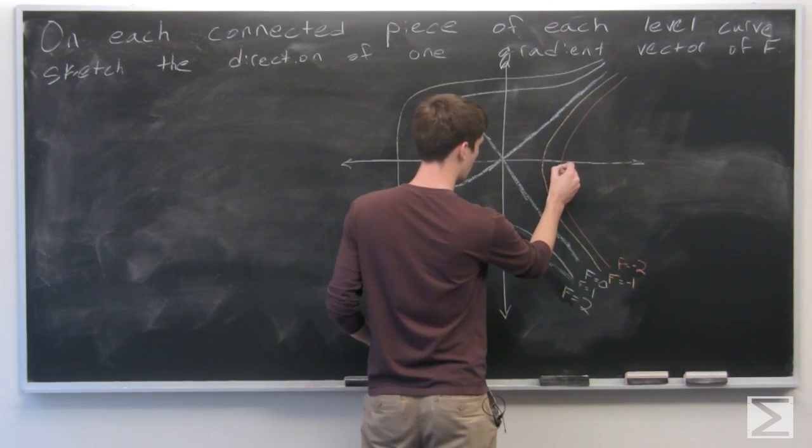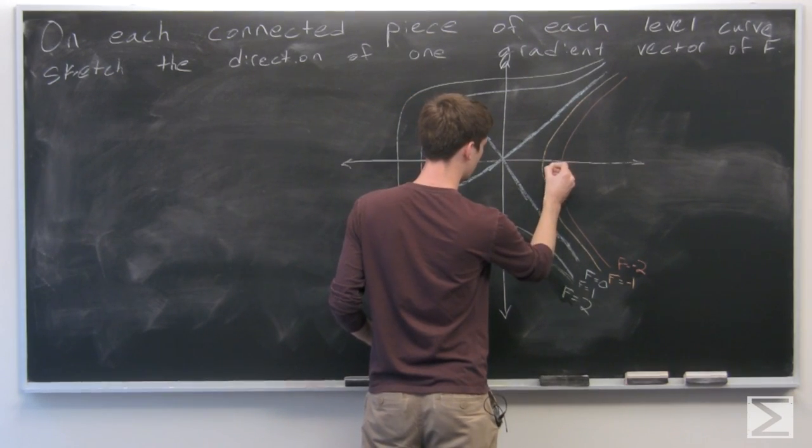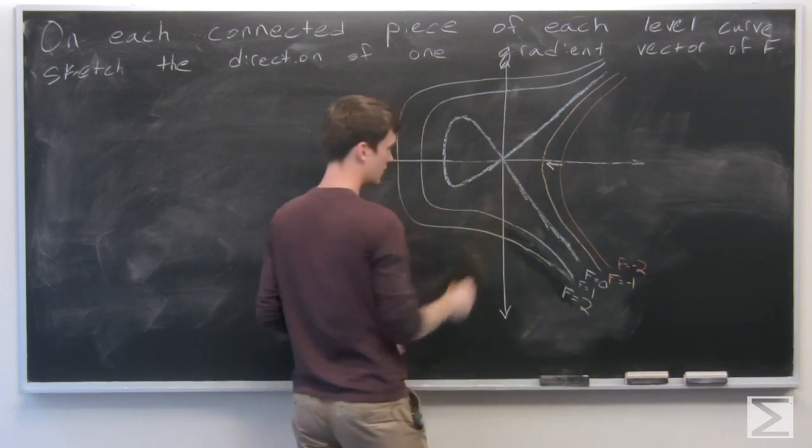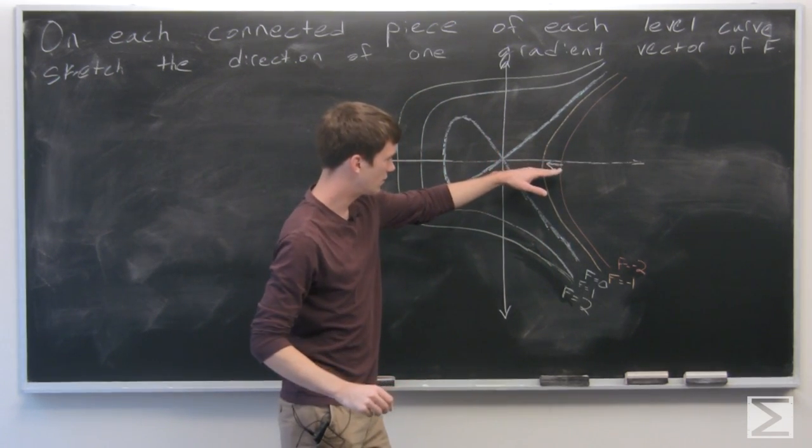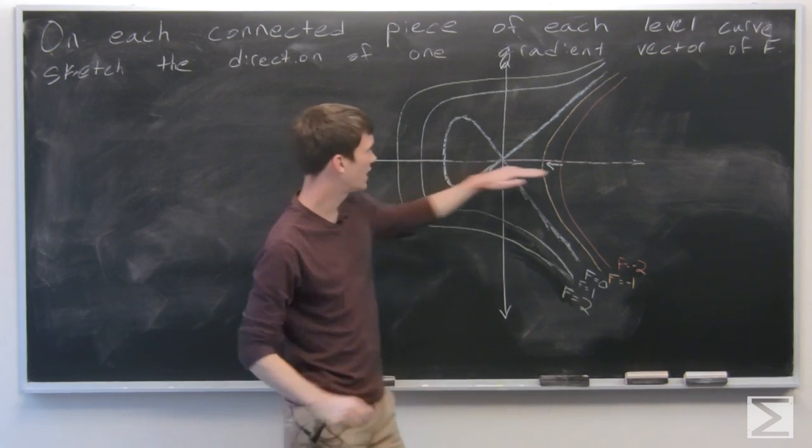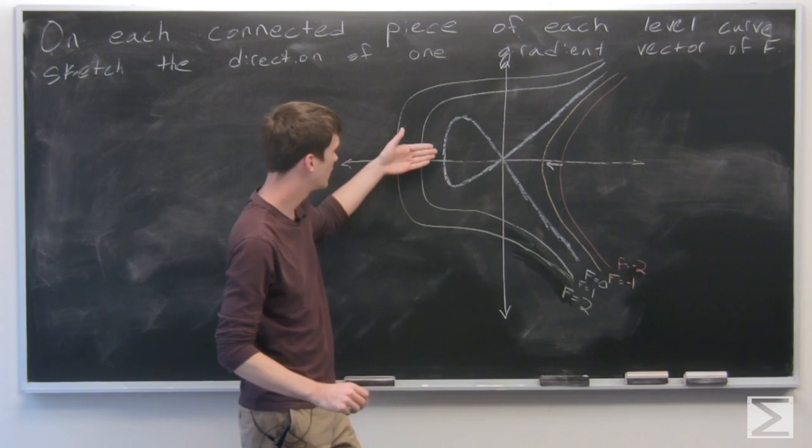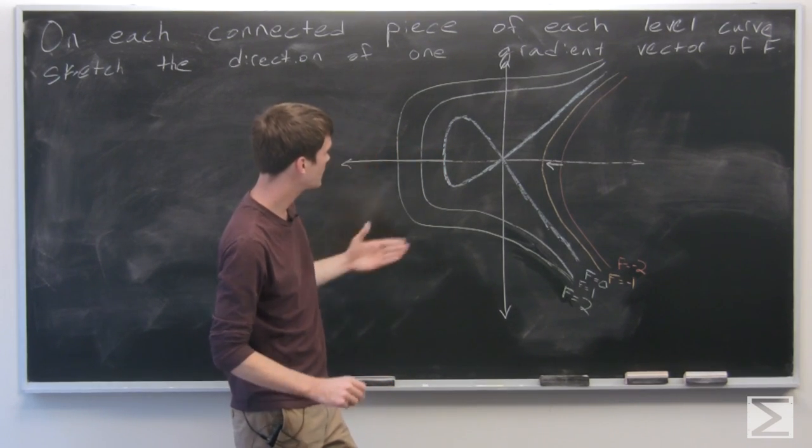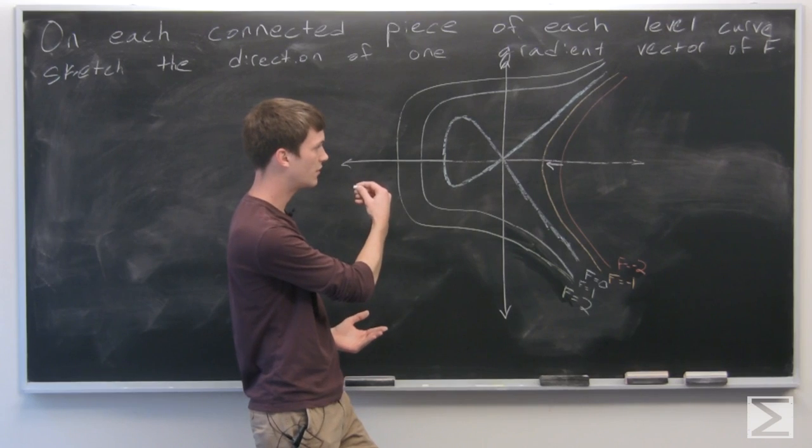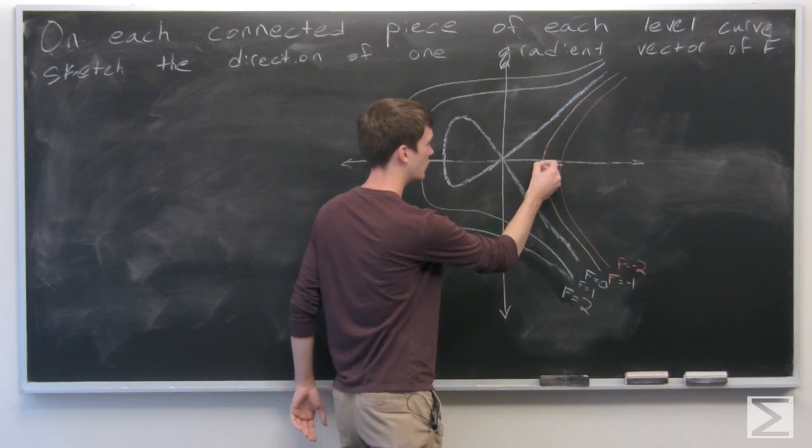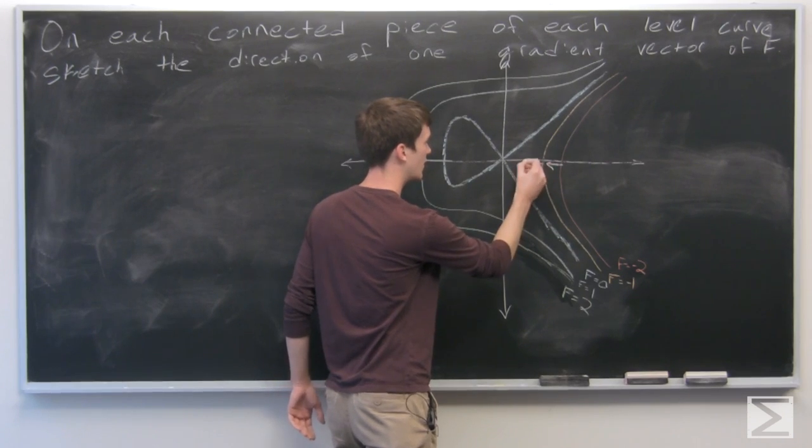So the easiest one would be right at where I drew the x axis. We see that all of the curves are kind of flat at a point, so we can draw our gradient vectors as perpendicular in that direction since we're going in the direction of increasing f.